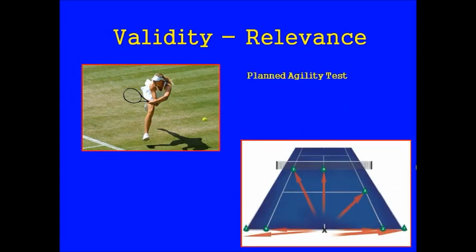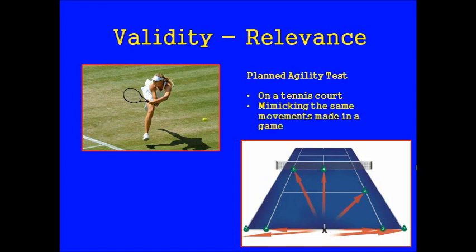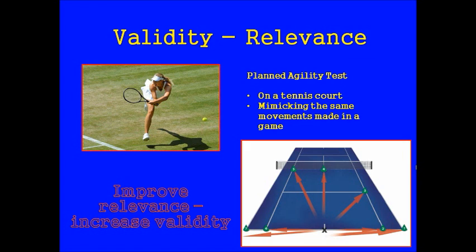For a tennis player, we must search for a more relevant test — in this case, the planned agility test. This test involves lateral movements across the baseline, as well as diagonal and linear movements. This test is much more valid because it takes place on a tennis court, wearing tennis clothing and shoes, and it mimics the same movements made in the game. So when picking a test, it's really important that you pick one that's relevant to the sport you're analysing, as this will increase validity.